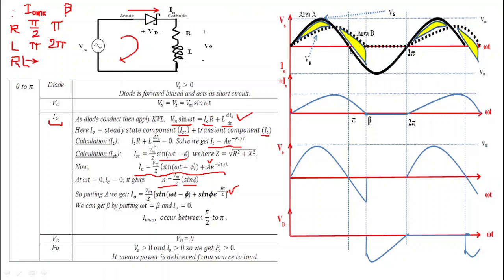To understand this derivation of output current, you must have knowledge of network theory — this derivation is based on sinusoidal steady-state analysis. I will make a separate video on steady-state analysis. If you don't know or don't understand this derivation, there is no need to memorize it. You can skip it because it is not important from an exam point of view, whether you are preparing for GATE or ESE.